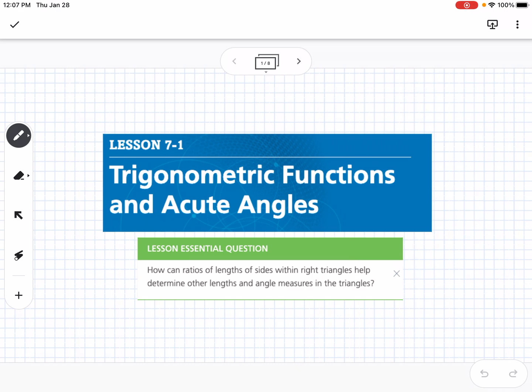This is lesson 7.1, which is Trigonometric Functions and Acute Angles. Our essential question is how can ratios of lengths of sides within right triangles help determine other lengths and angle measures in the triangle?